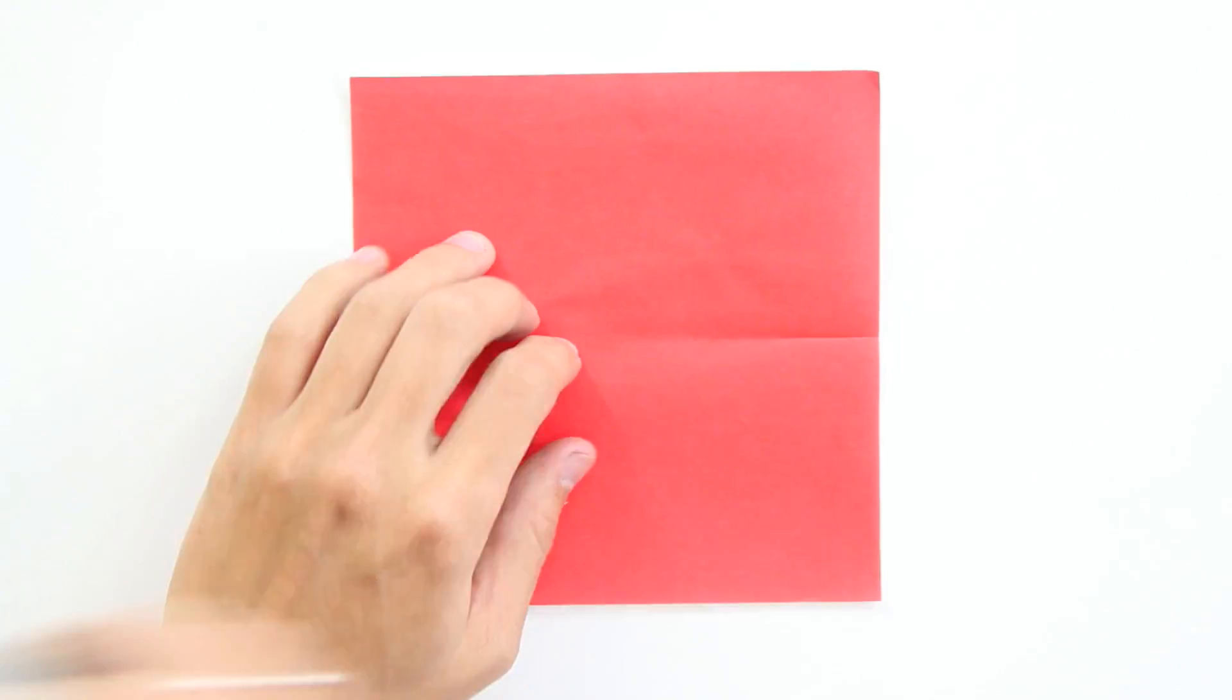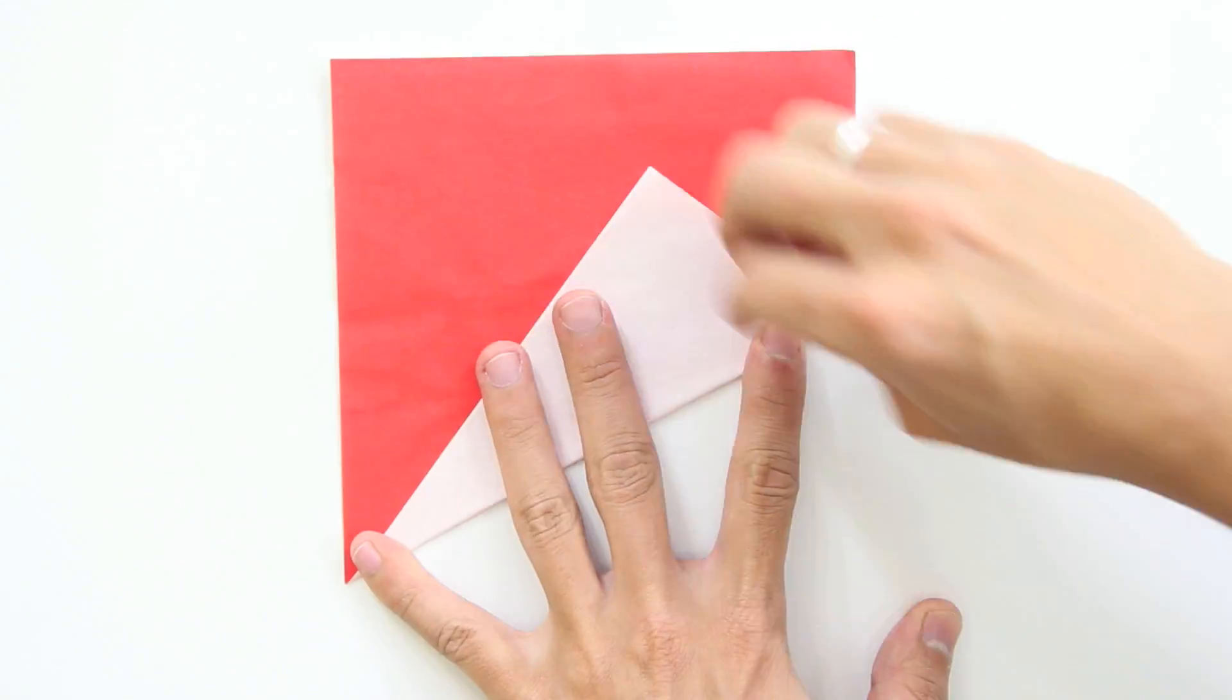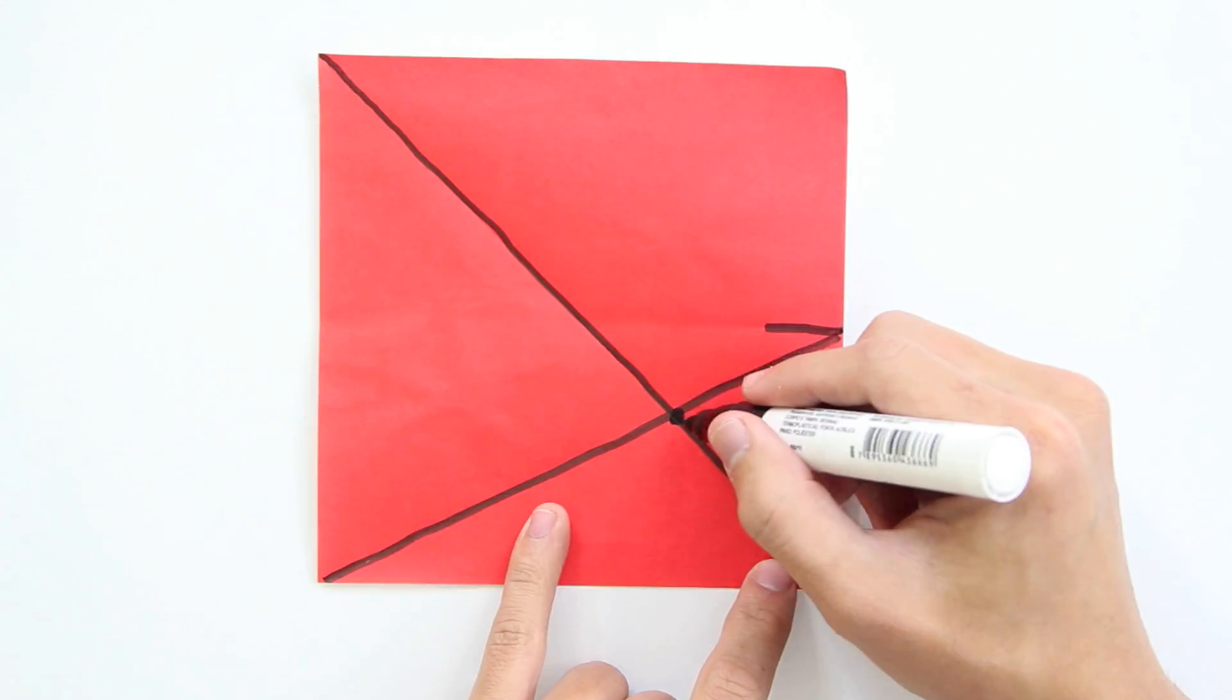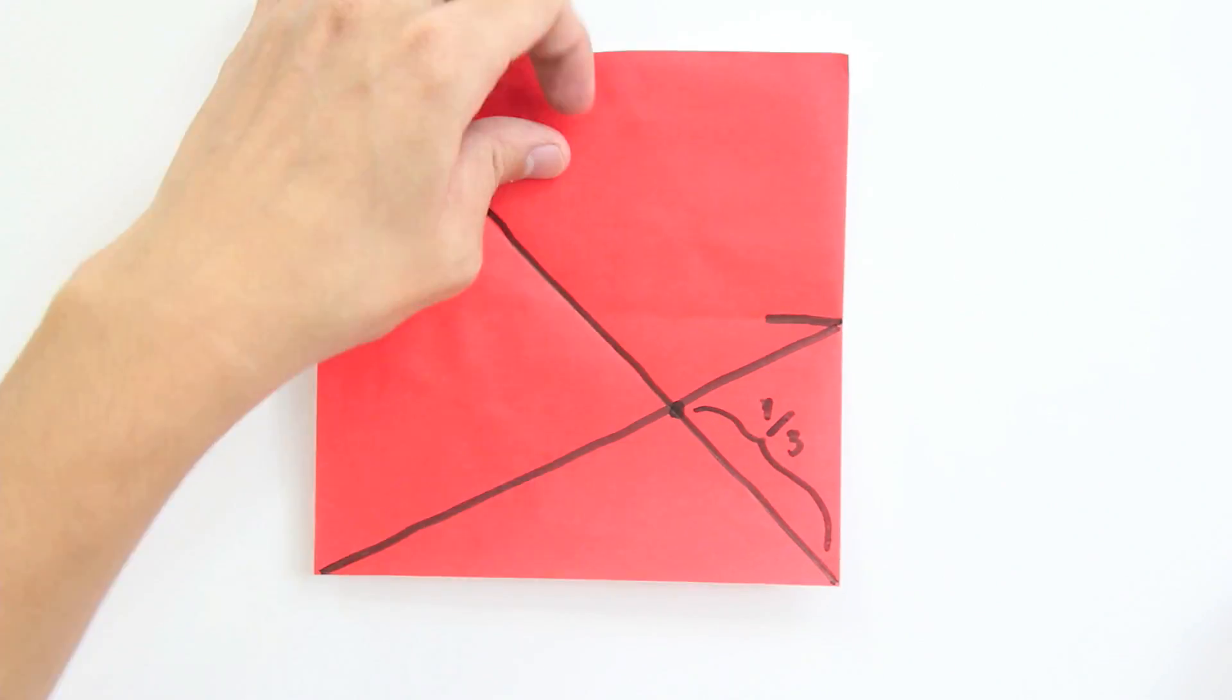First, let's remember how to divide the paper in three parts. So, fold the side of the paper in two parts, now make a fold from the vertex up to this line, and fold the diagonal. So, this point here is exactly one-third of the paper.